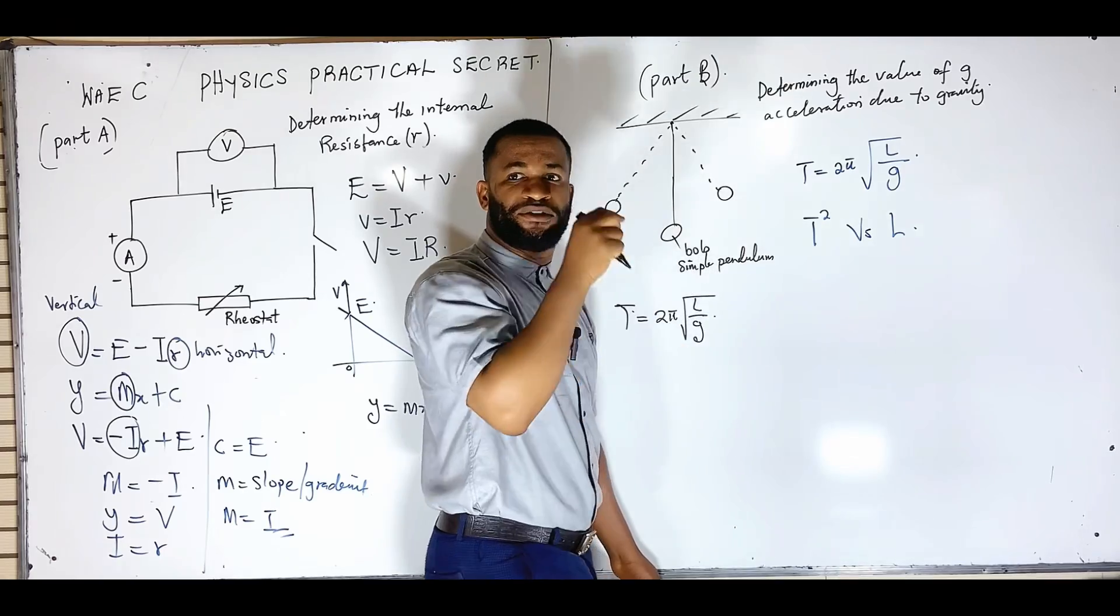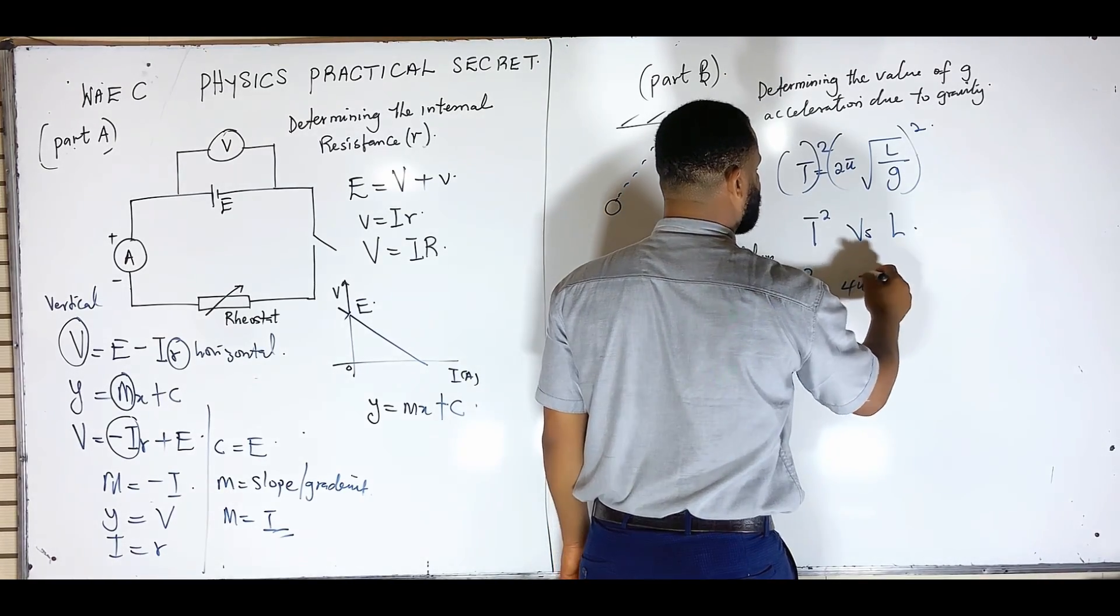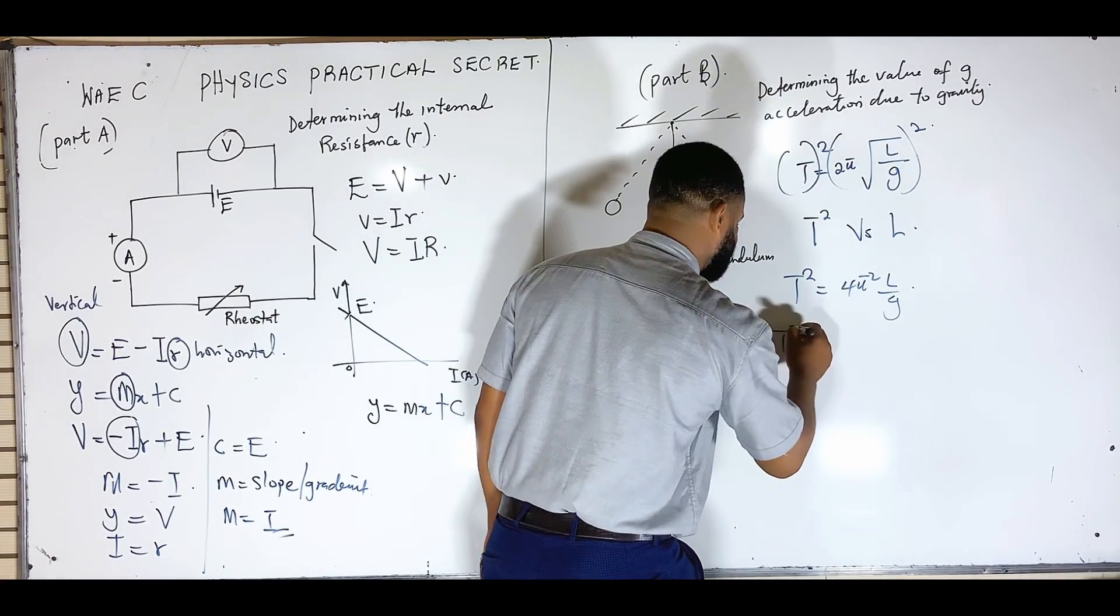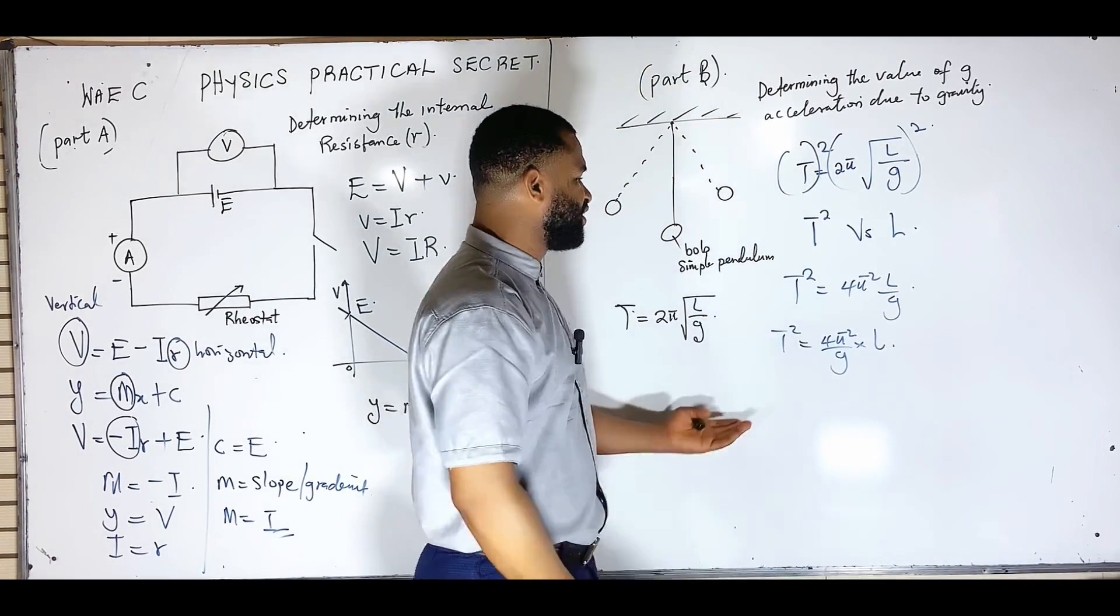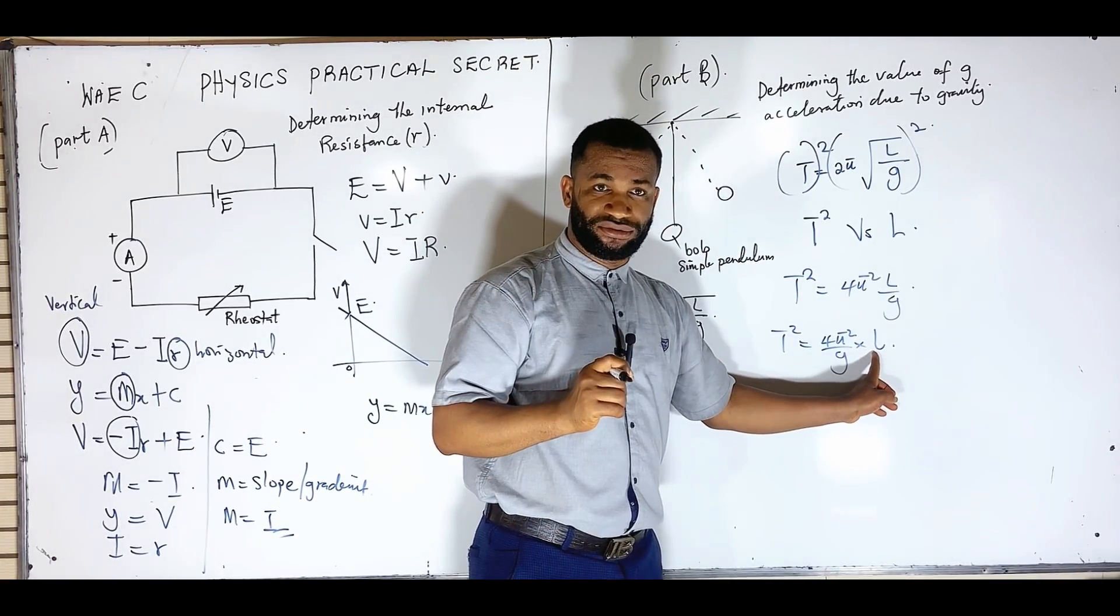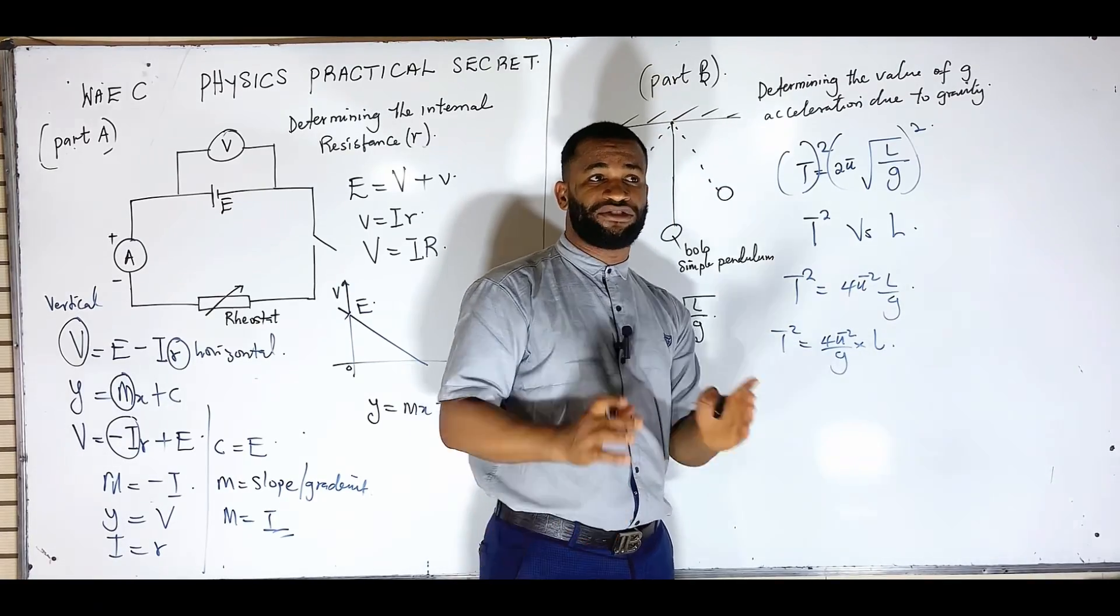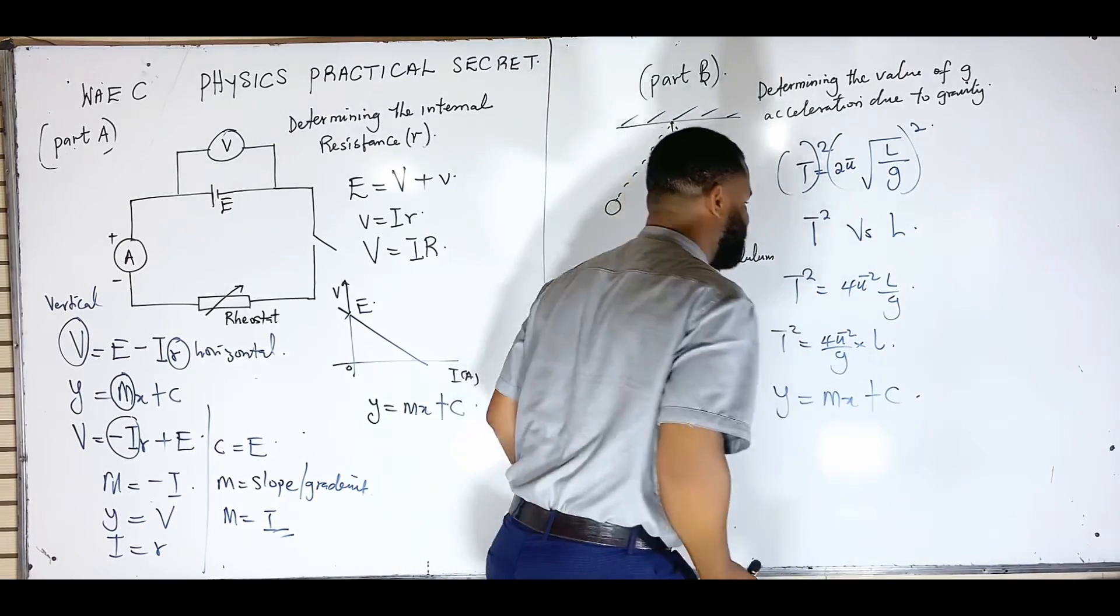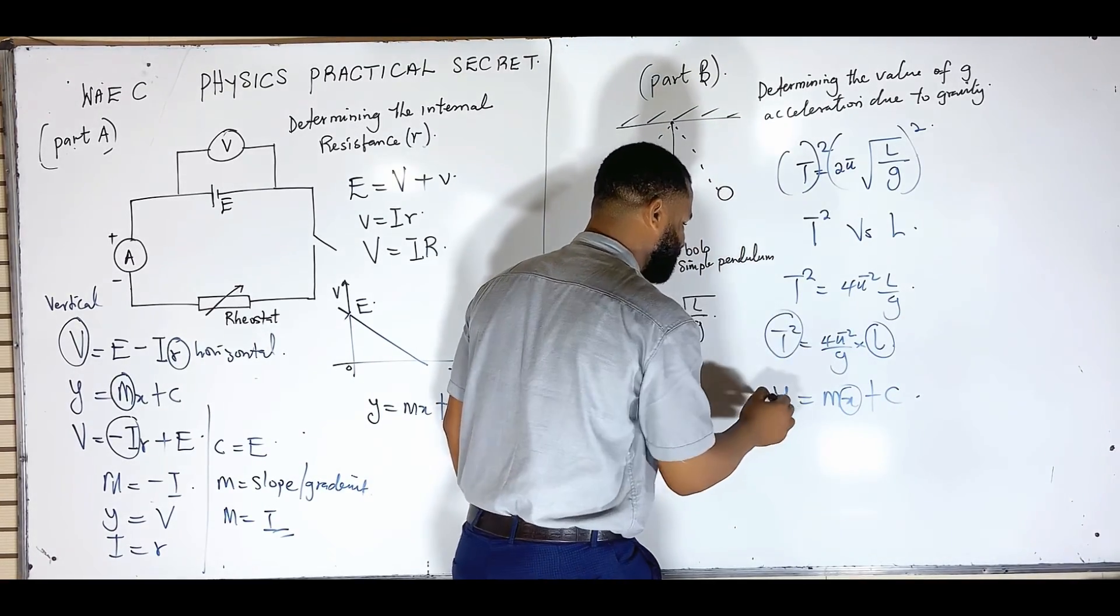I am going to find T square here by making it the subject formula. I am going to square this side, square this. So I have that T square is equal to 4π² multiplied by L all over g. So T square equals 4π² over g times L. This is the equation of T square on the vertical and L on the horizontal.